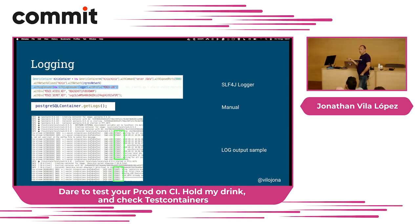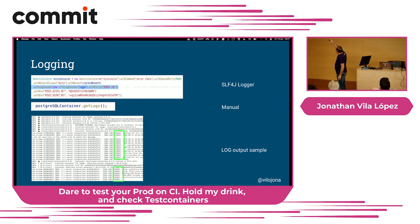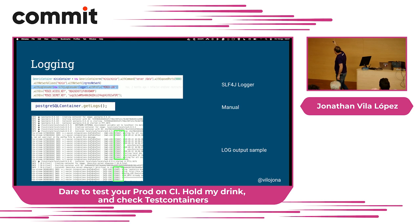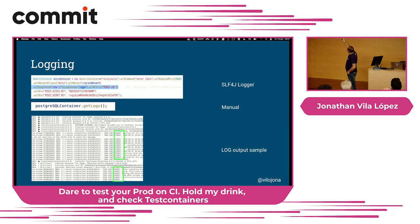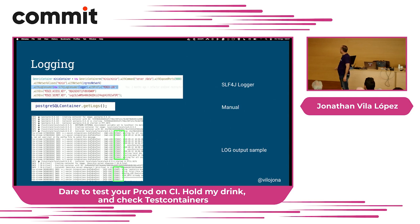Containers output logs to standard output, but we can collect them into a logger. We use withLogConsumer and an SLF4J consumer. Each container's logs will appear with a prefix so we know which container they're coming from. Or we can specify getlogs manually to get all of them.